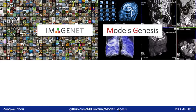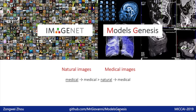Nowadays, ImageNet-based transfer learning is a common practice in medical image analysis. Our Models Genesis are different from ImageNet models in three ways. First, we pre-trained models directly on medical images, while ImageNet models are pre-trained on natural images. We believe that transfer learning from medical to medical images should be more powerful than from natural to medical images.